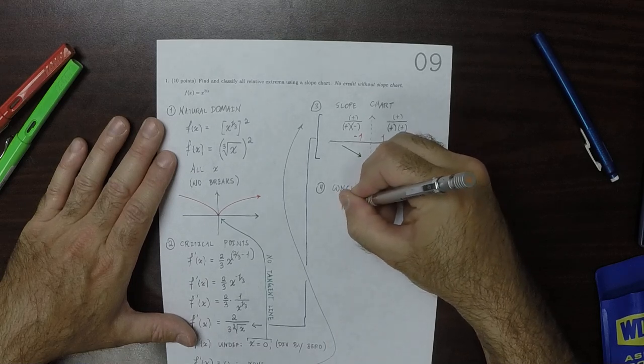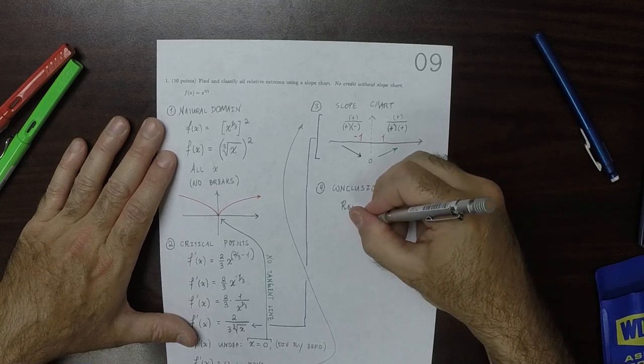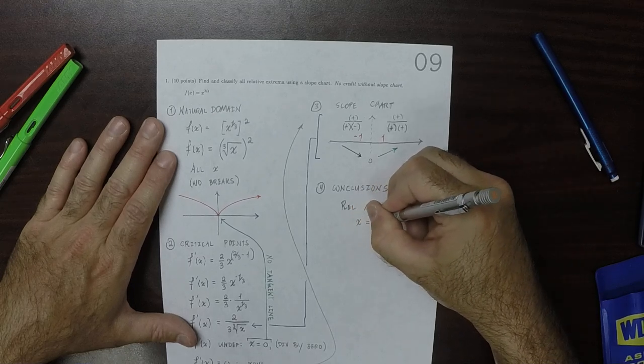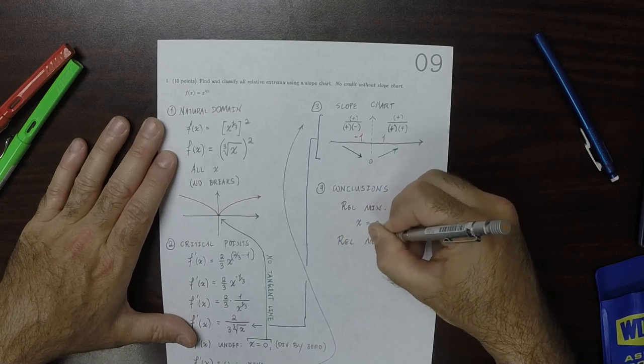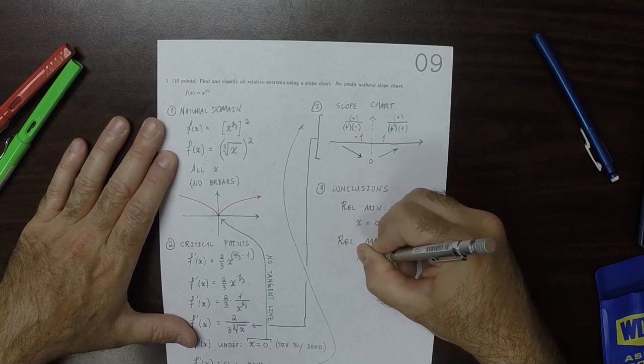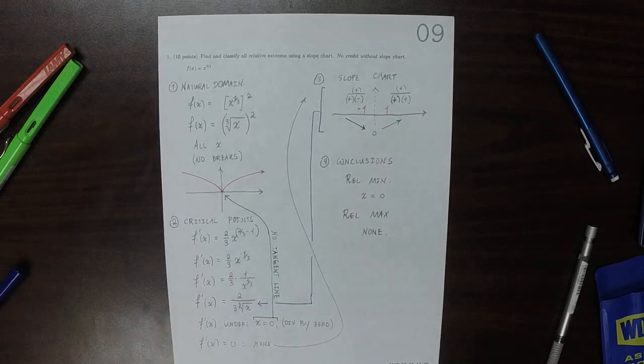For relative min, there is a relative min at x is equal to zero. And then for relative max, there are none. And that's the answer.